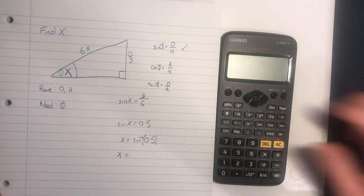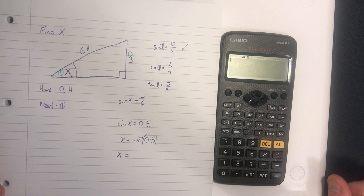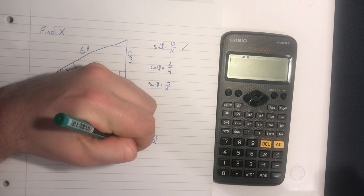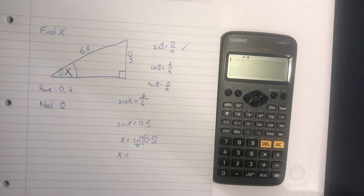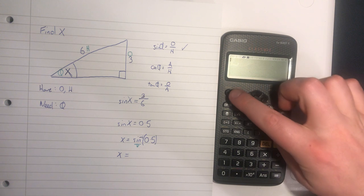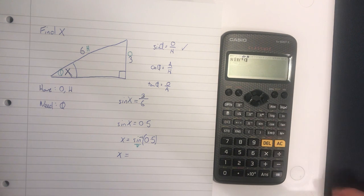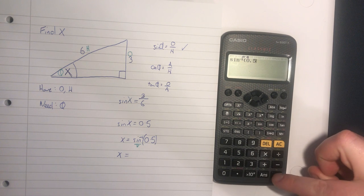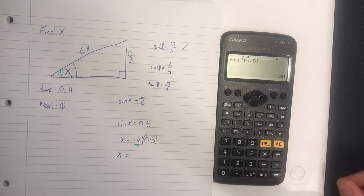Now we go over to our calculator. We turn our calculator on. In order to get sine inverse, we do shift sine. And now I can put in 0.5, and I should probably close my bracket, equals 30.